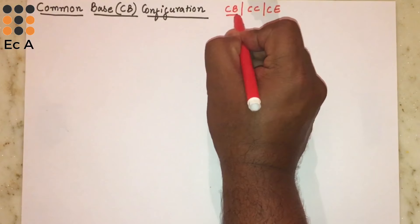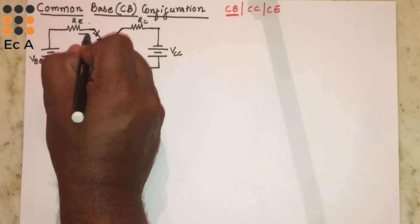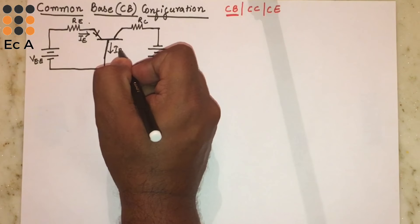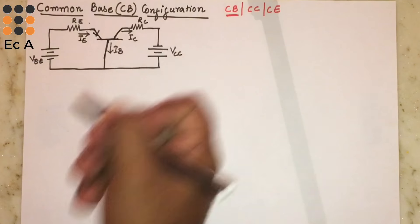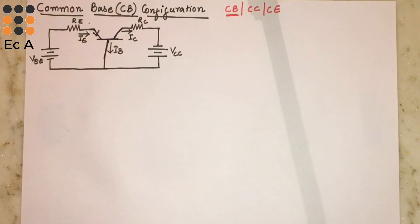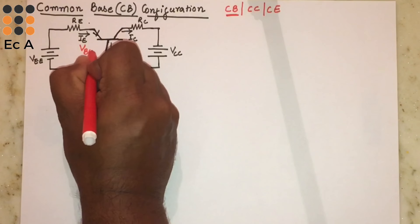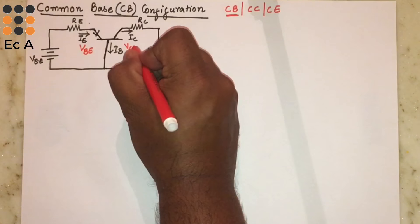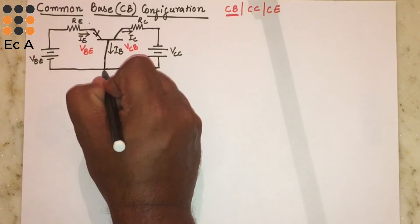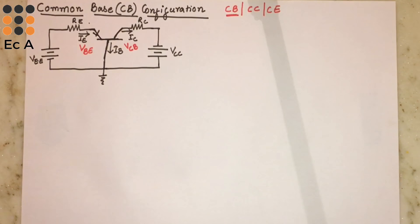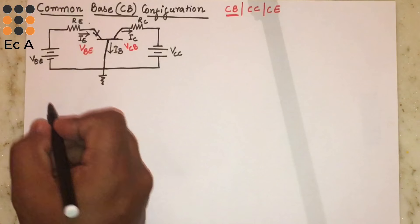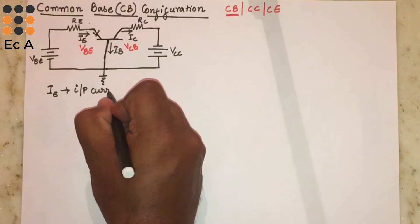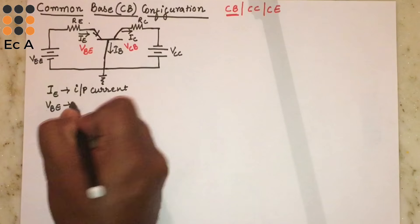Now let us connect a resistor RC across the collector. Since the collector-base junction should be reverse biased, we connect negative to the collector terminal and positive to the base terminal. The voltage across emitter and base is called VEE, and across the collector terminal and base terminal is called VCC. The current through the emitter is IE, through the base is IB, and through the collector is IC. The voltage between emitter and base is VBE and between collector and base is VCB.